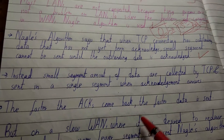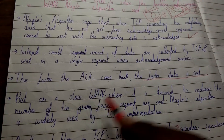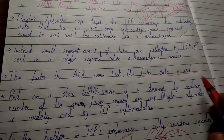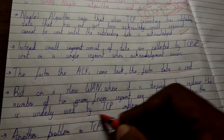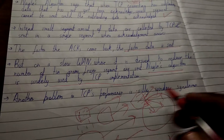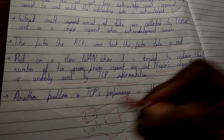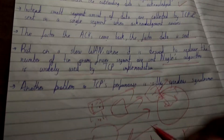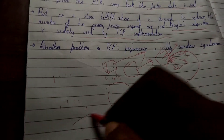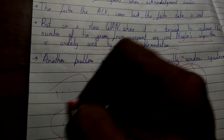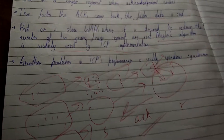The faster the acknowledgement comes back, the faster the data is sent. But on a slow WAN where it is desired to reduce the number of tiny grams, fewer segments are sent. Nagle's algorithm is widely used by TCP implementations — small tiny grams are combined into single larger segments and then sent over WAN so they don't cause congestion in the network.